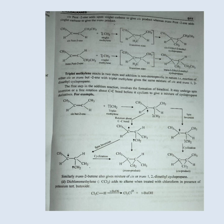Triplet methylene reacts in two steps and the addition is non-stereospecific in nature. The reaction of either cis- or trans-but-2-ene with triplet methylene gives the same mixture of cis- and trans-1,2-dimethylcyclopropane.